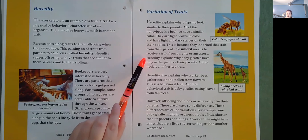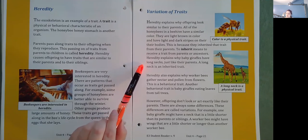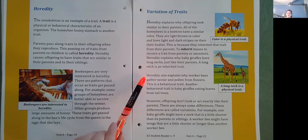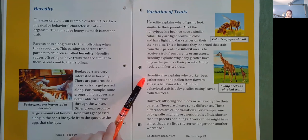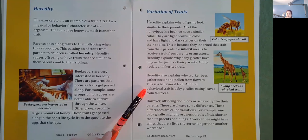Heredity explains why baby giraffes have long necks just like their parents. A long neck is an inherited trait. Heredity also explains why worker bees gather nectar and pollen from flowers. This is a behavioral trait. Another behavioral trait is baby giraffes eating leaves from tall trees.